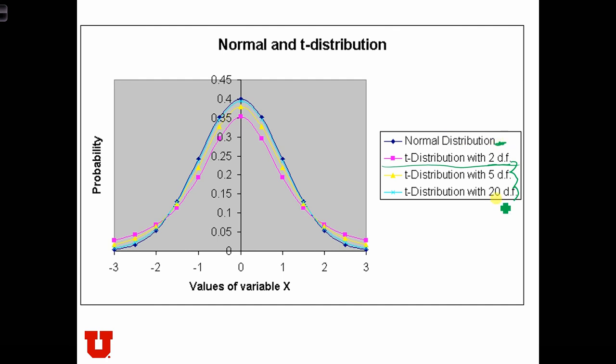What we find is that when the degrees of freedom approaches about 30, there's no discernible difference between the t-distribution and the standard normal distribution.